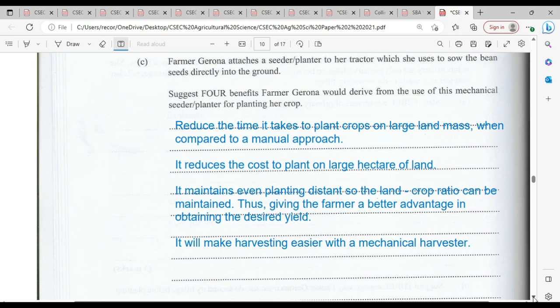It will reduce the time it takes to plant the crop on large land mass when compared to a manual approach. It reduces the cost to plant on large hectares of land. It will also maintain even planting distance, so the land crop ratio can be maintained.